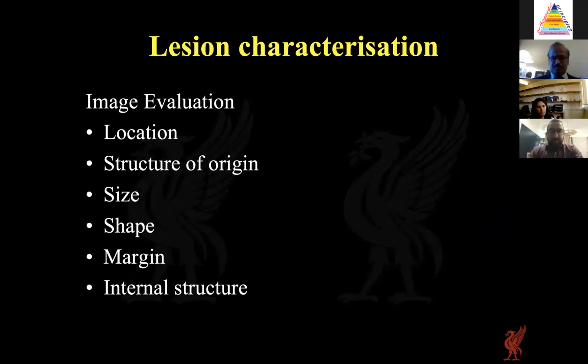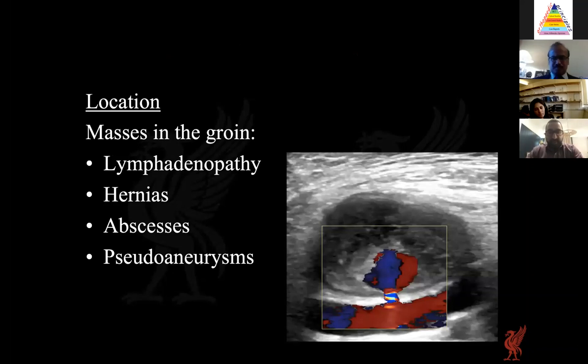The imaging approach is similar for both ultrasound and MRI. When presented with a lesion, key factors include the location of the lump, the structure of origin, size, shape, margin, and internal structure. For example, with masses in the groin, you can clinically reduce your differential diagnosis to a handful and then use other ultrasound features to identify the cause of the lump.